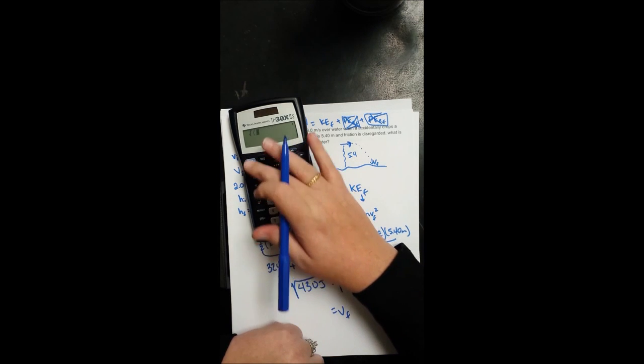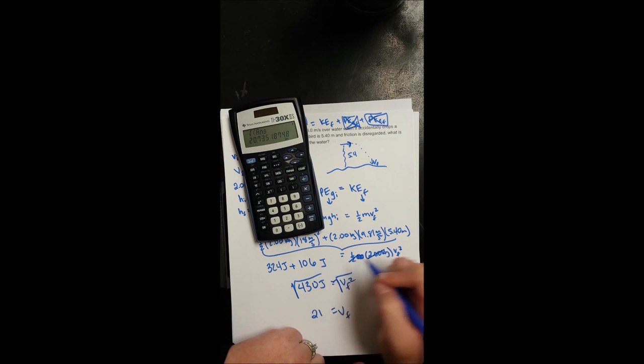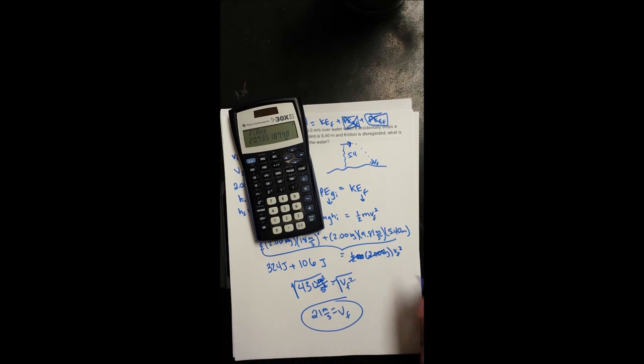So v_f should be about 21. We've still got to divide by 1 kilogram so that this ends up being meters per second. Here you go.